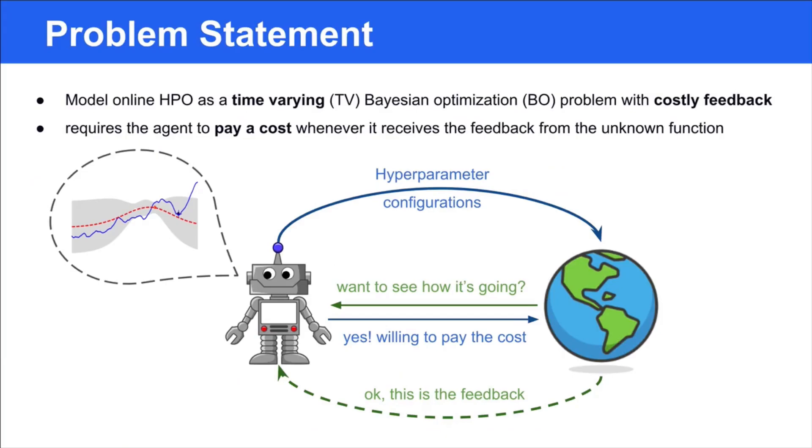To address this problem, we propose to model the online HPO as a time-varying Bayesian optimization problem with costly feedback. Compared to the conventional setting, it requires the agent to pay a cost whenever it decides to query the unknown objective function.